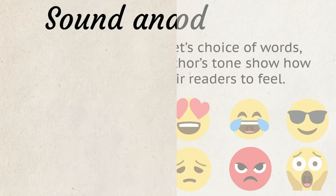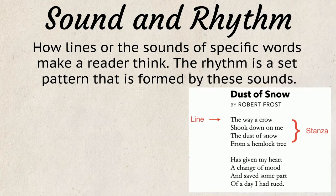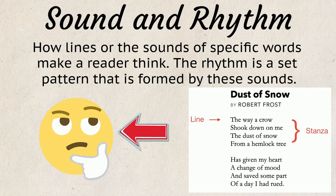In poetry, the sound of a poem is how lines or the sounds of specific words make a reader think. The rhythm is a set pattern that is formed by these sounds.